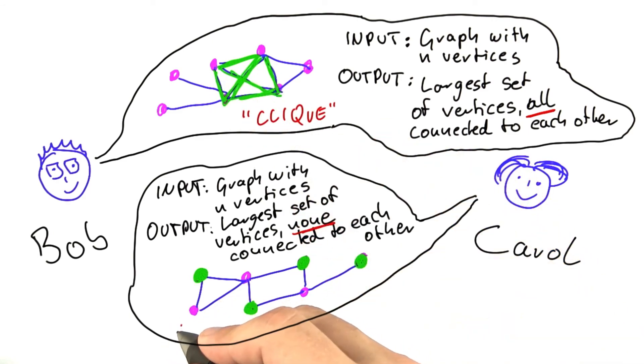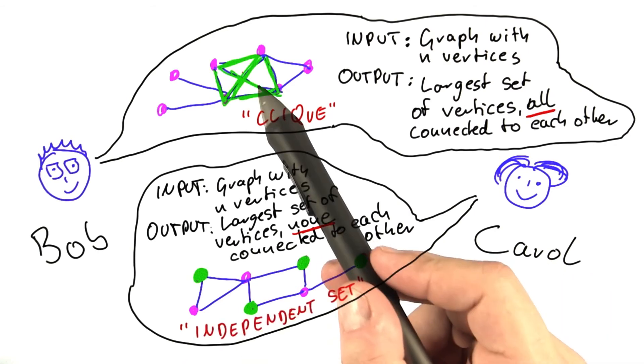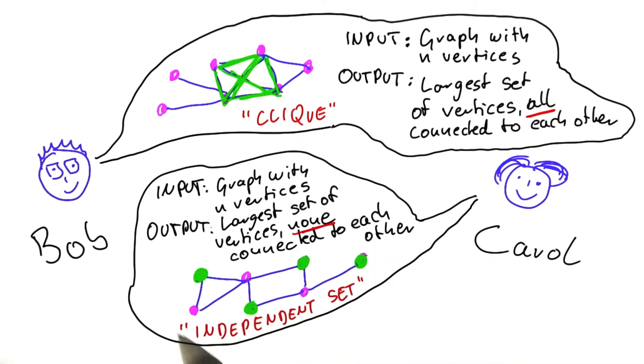And we'll call Carol's problem independent set. Carol is basically looking for the opposite of a closely connected clique. Carol is looking for vertices that are not connected to each other. So if those were friends, they wouldn't know of each other.